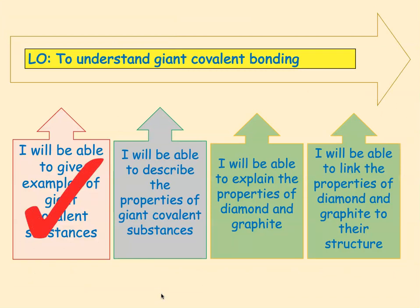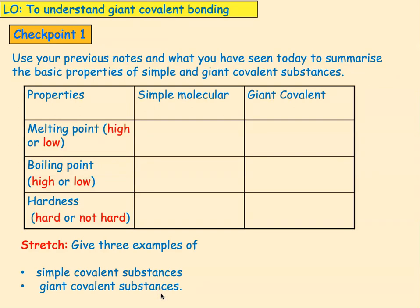Some examples of giant covalent substances are graphite, diamond, and silicon dioxide. Use your previous notes and what you've seen today to summarise the basic properties of simple molecular structures and giant covalent structures. Draw a table and sketch in whether the melting point is low or high, the boiling point is low or high, and whether it's hard or not hard. Name three simple covalent substances and three giant covalent substances, then pause the video.